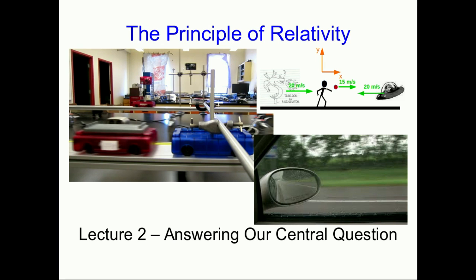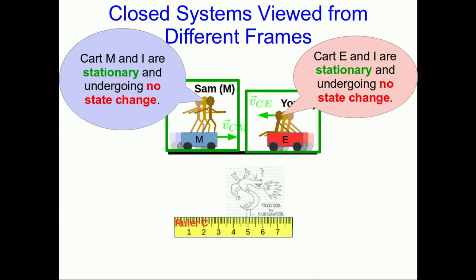Welcome to Lecture 2 of the Principle of Relativity in Phys1104. In this lecture, we're going to answer the central question of the unit that I posed in the last lecture, although we'll still have details to work out in the remaining two lectures. In the last lecture, we saw that all observers in inertial frames agree about whether a system is isolated. Let's do the same thing now for energy that that tells us about momentum.